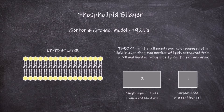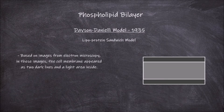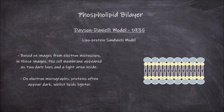Other models for the cell membrane have been proposed over the years. One of these was proposed by Hugh Davson and James Danielli in 1935. It was called the Davson-Danielli model, or the lipoprotein sandwich model. This was based on images from electron microscopy. In these images the cell membrane appeared as two dark lines and a light area inside. On electron micrographs proteins often appeared dark, whilst lipids appeared lighter. This led to their model of the phospholipid bilayer having two layers of proteins on each side of the lipid bilayer.